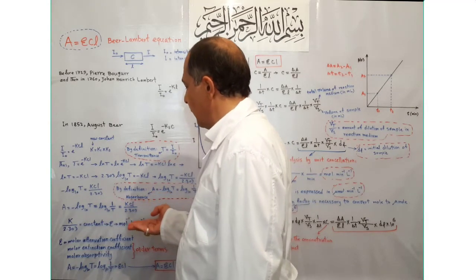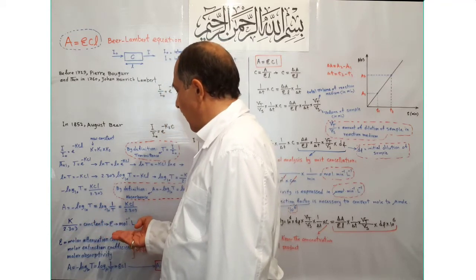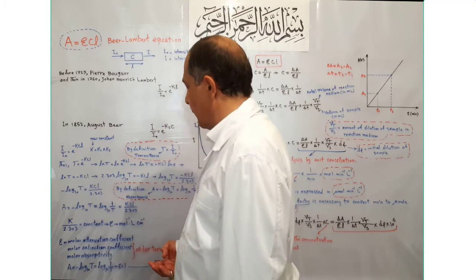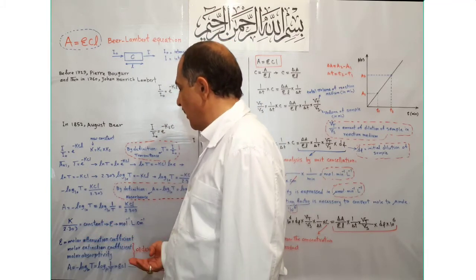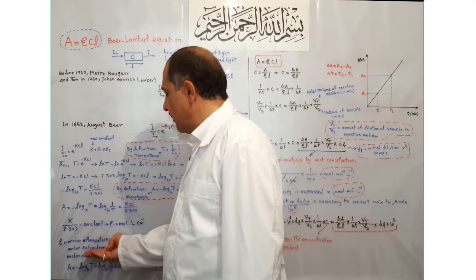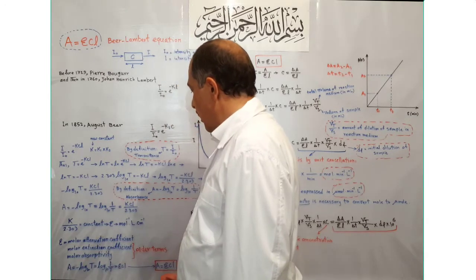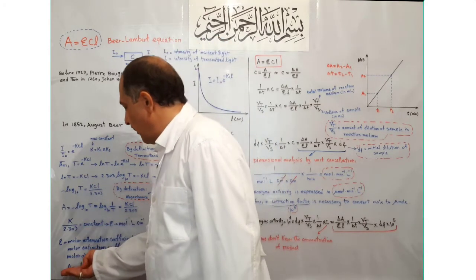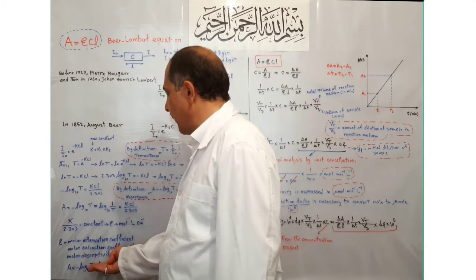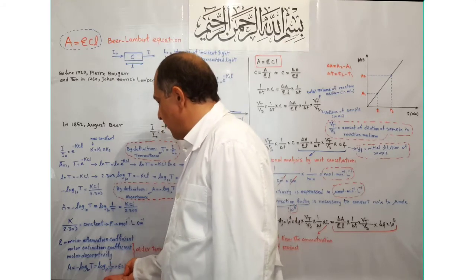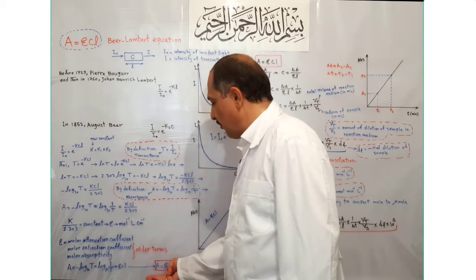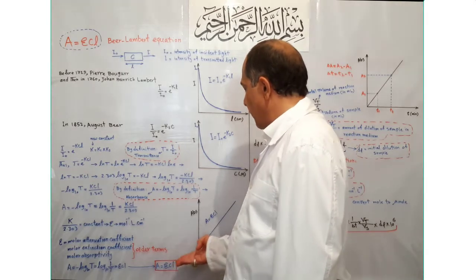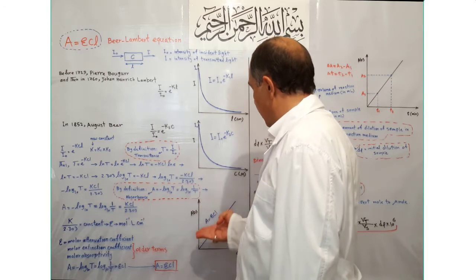K divided by 2.303 is a constant called epsilon (ε). When expressed in liters per mole per centimeter, it is termed the molar attenuation coefficient. Older terms include molar absorption coefficient, molar extinction coefficient, and molar absorptivity. Replacing K/2.303 with ε gives: Absorbance = −log₁₀(T) = log₁₀(1/T) = εCL, or in brief, A = εCL. This is the Beer-Lambert equation, and the respective plot is linear when absorbance is plotted versus concentration.